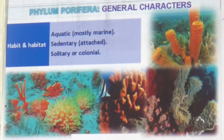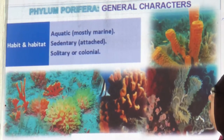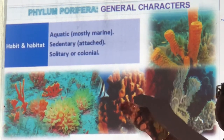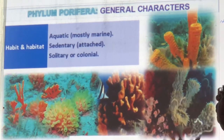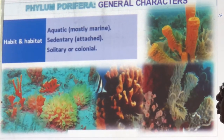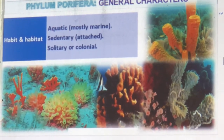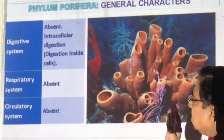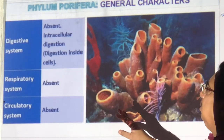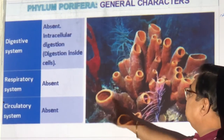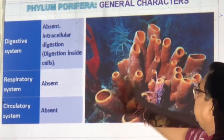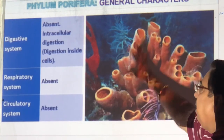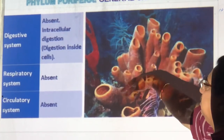Habit and habitat of sponges: they are mostly in sea water, always attached to something, and live singly or in colonies. The digestive system is absent — digestion is intracellular, inside the cell. Respiratory system is absent — water goes to each and every cell. Circulatory system is absent — water is the circulatory medium, entering through small holes (ostia) and coming out of the large opening.